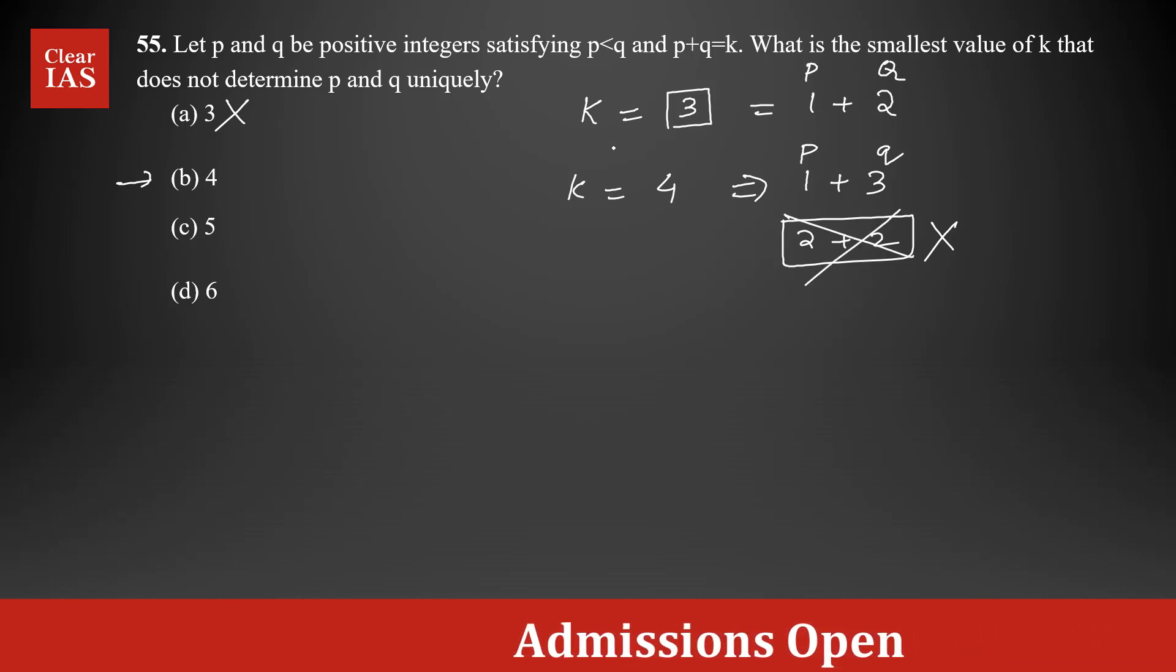If K = 4, you can find the unique values of P and Q. I can confirm that P = 1 and Q = 3. So that's not the answer. Option B is also eliminated.